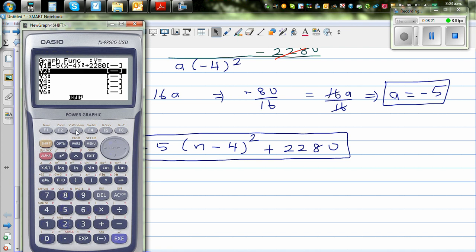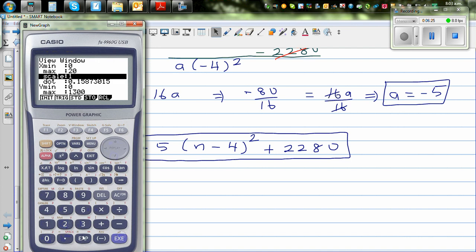I need to change the scale from 0 to 20. Scale of 2. And Y I'll go from 0 to—maximum is 2280—I'll go to 2300. And draw the graph. So this is the graph.